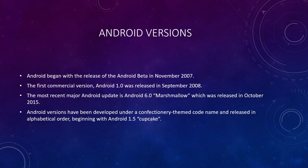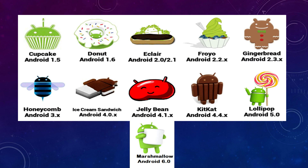Android versions have been developed under a confectionery theme code name, released in alphabetical order. They started with Cupcake — you can see it pictorially on the slide — then Donut, Eclair, Froyo, Gingerbread, Honeycomb, Ice Cream Sandwich, Jelly Bean, KitKat, Lollipop, and the latest, Marshmallow, which is Android 6.0.